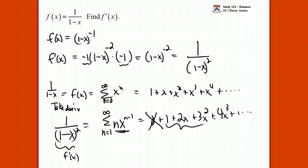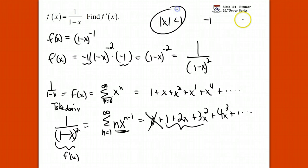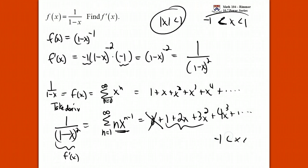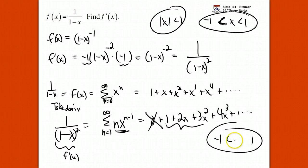So now this is a function that we know the power series representation for. This original function only converges between minus 1 and 1. Well, now this function's power series will only converge between minus 1 and 1 as well.